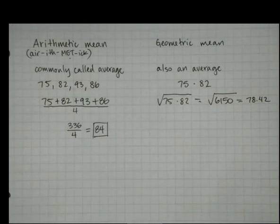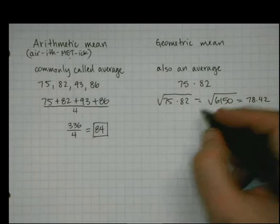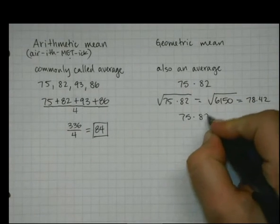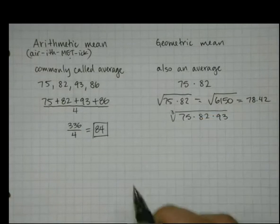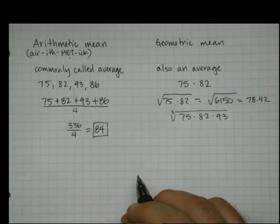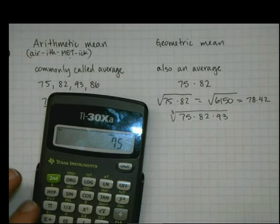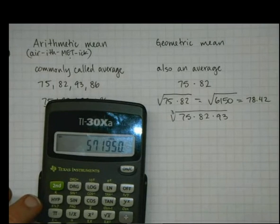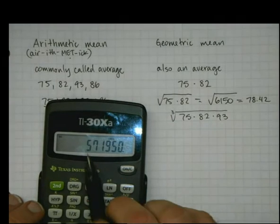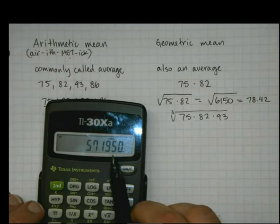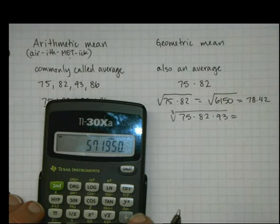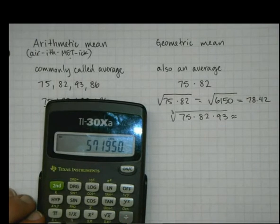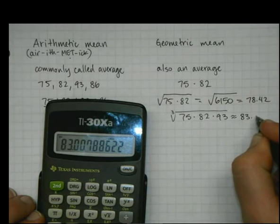If you have more numbers, then you take a higher root. So if I have 75, 82, and 93, because I now have three numbers, I'm going to take a cube root. 75 times 82, times 93, or 571,950. I take the cube root of that, and I got 83.01-ish.